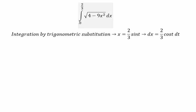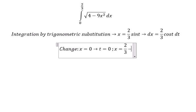Next, we need to change the bounds. If x equals 0, you got t equals 0. If x equals 2 over 3, you got t equals π over 2.